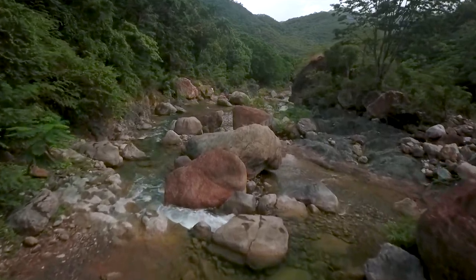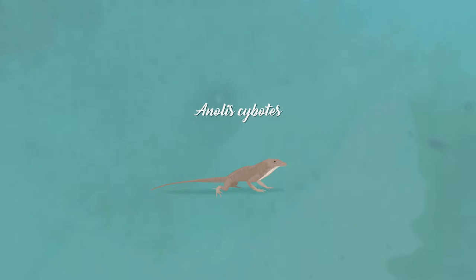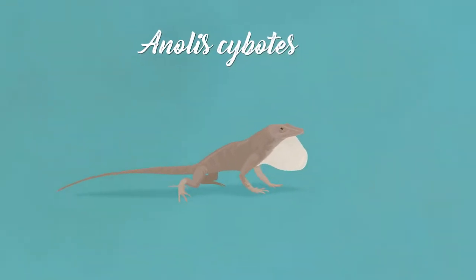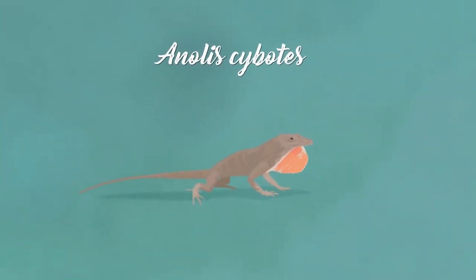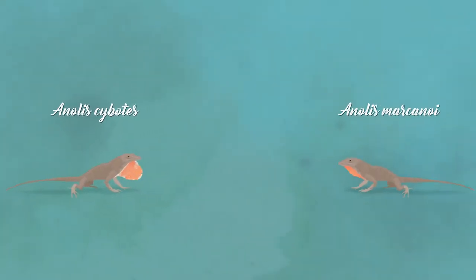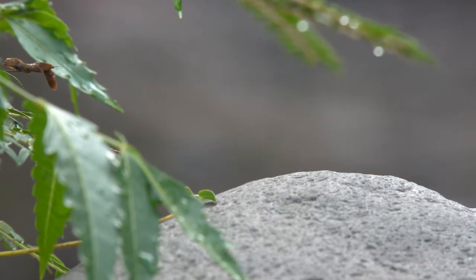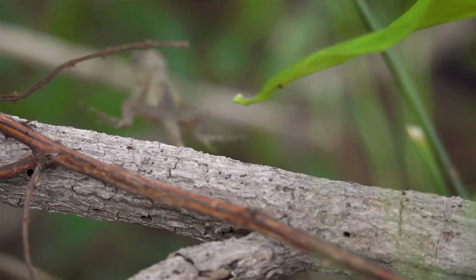Then we did an experiment where we changed the color of the dewlap. With the cybotes, we pulled out its dewlap and smeared red coral lipstick on it to make it red like marcanoi — and then when put with a marcanoi, they fought. We did the same thing with the marcanoi, making its dewlap whiter with clown makeup. Changing the color of the dewlap actually fooled them into thinking that lizards that weren't their own species really were.